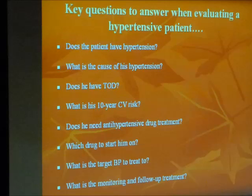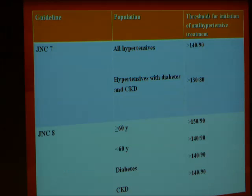Step 3: when blood pressure is not controlled with the initial drug choice, we can add a second drug. If the patient is on an ACE inhibitor initially, we add a calcium channel blocker as the second drug. Or if they are on a calcium channel blocker, we add ACE inhibitor as a second drug to control blood pressure to target. For those not tolerant to calcium channel blocker due to edema, a thiazide diuretic can be added to the ACE inhibitor.